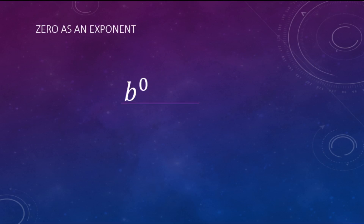Quick note: b to the zero power equals 1. There are some exceptions, but for the purposes of this video, any number to the zero power is going to equal 1.